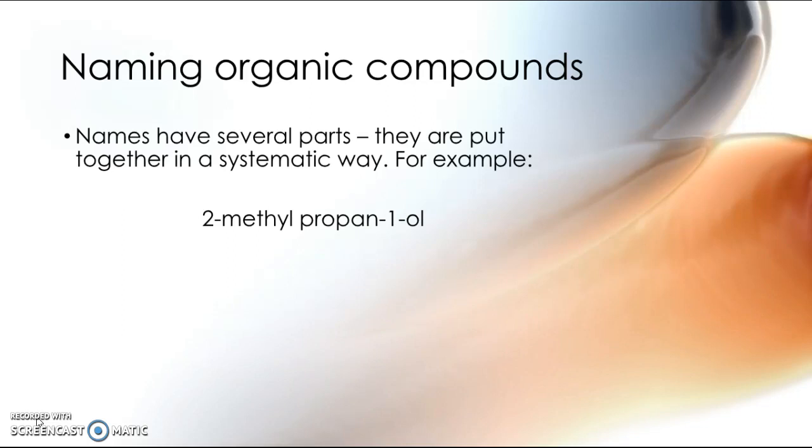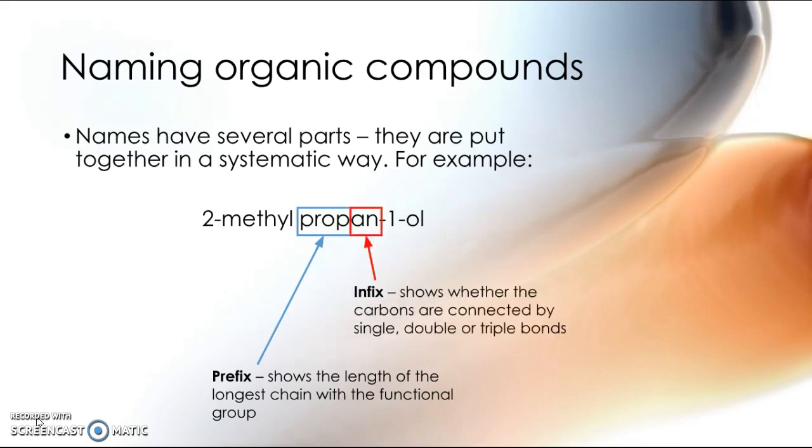If you have a name, and here's a fairly simple molecule, 2-methyl-propan-1-ol, there are several parts to this name. The prefix, prop, tells me how many carbon atoms are in the longest carbon chain. Prop means three. An, A-N, tells me that all the bonding between the carbon atoms are single bonds.